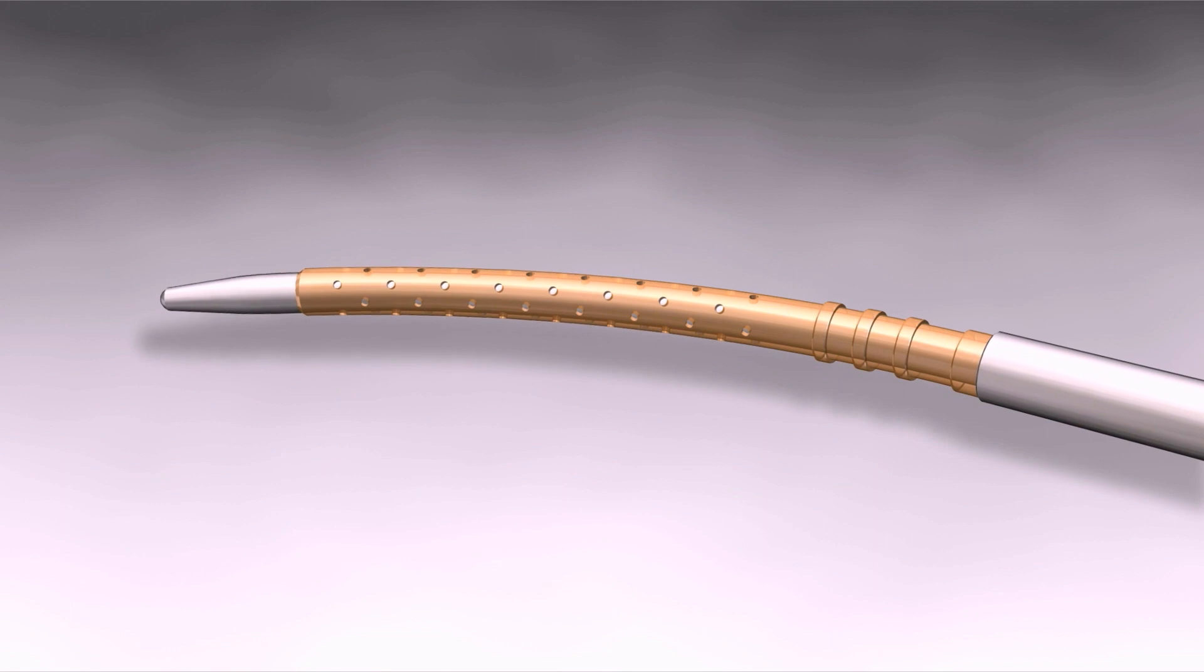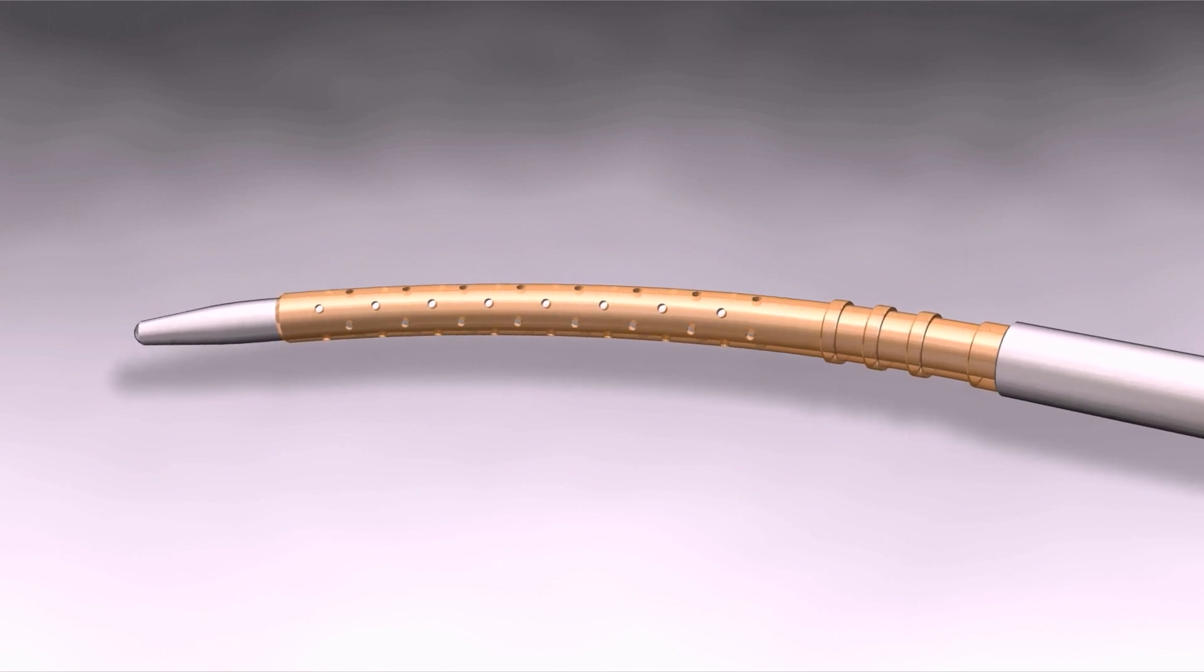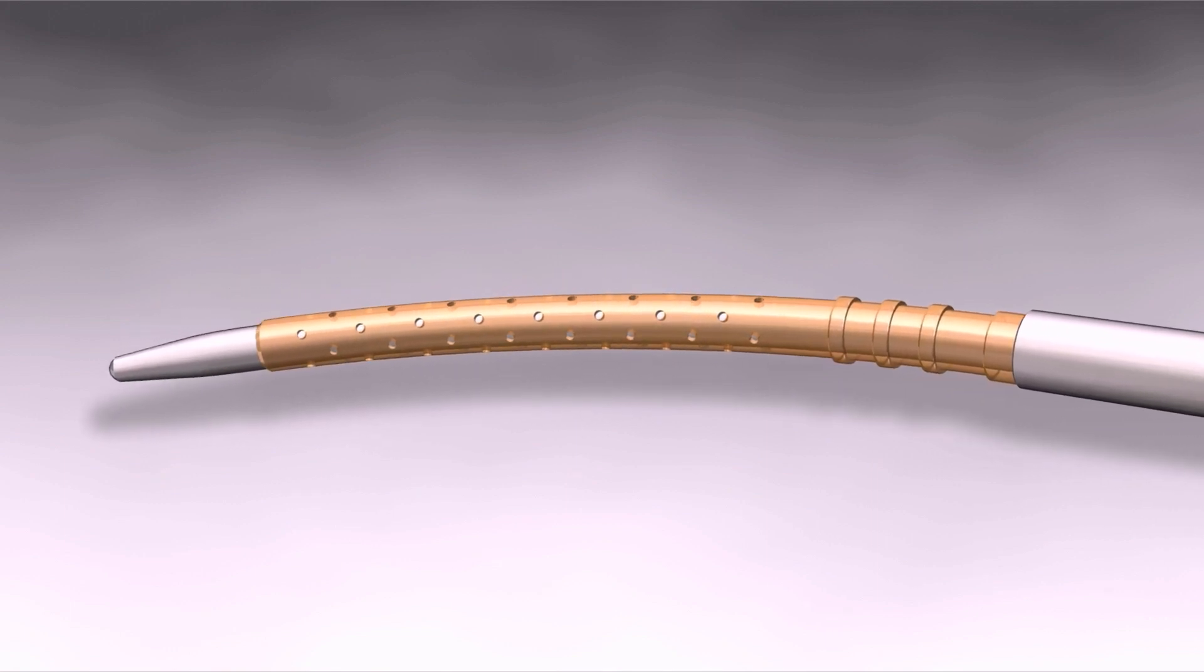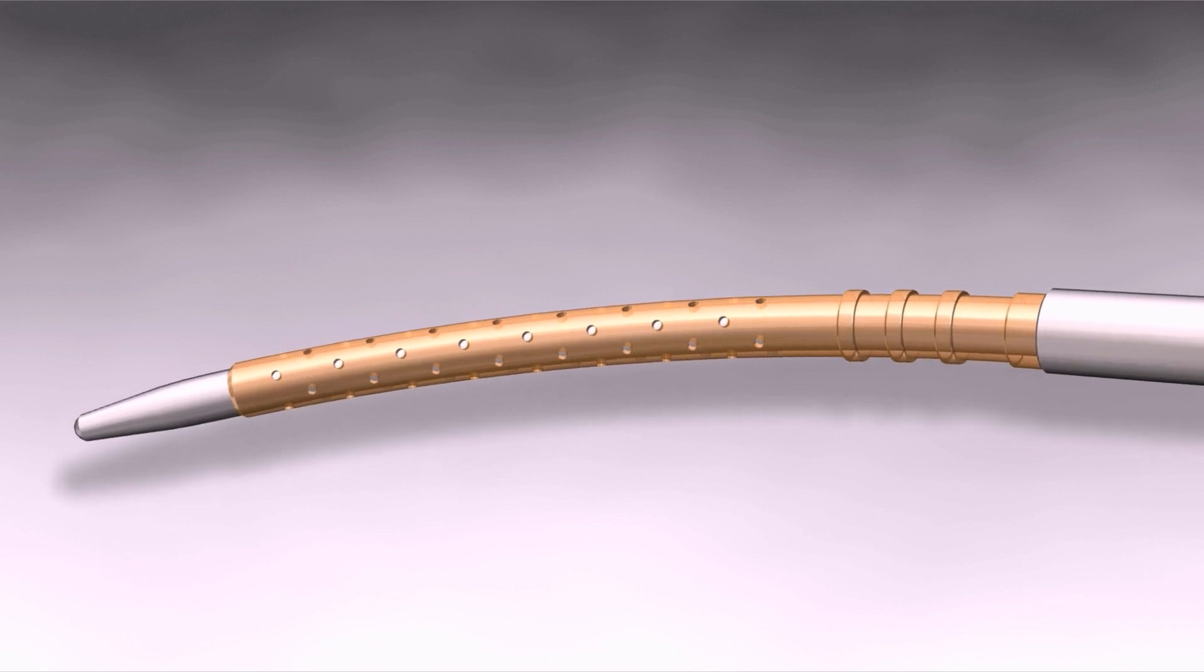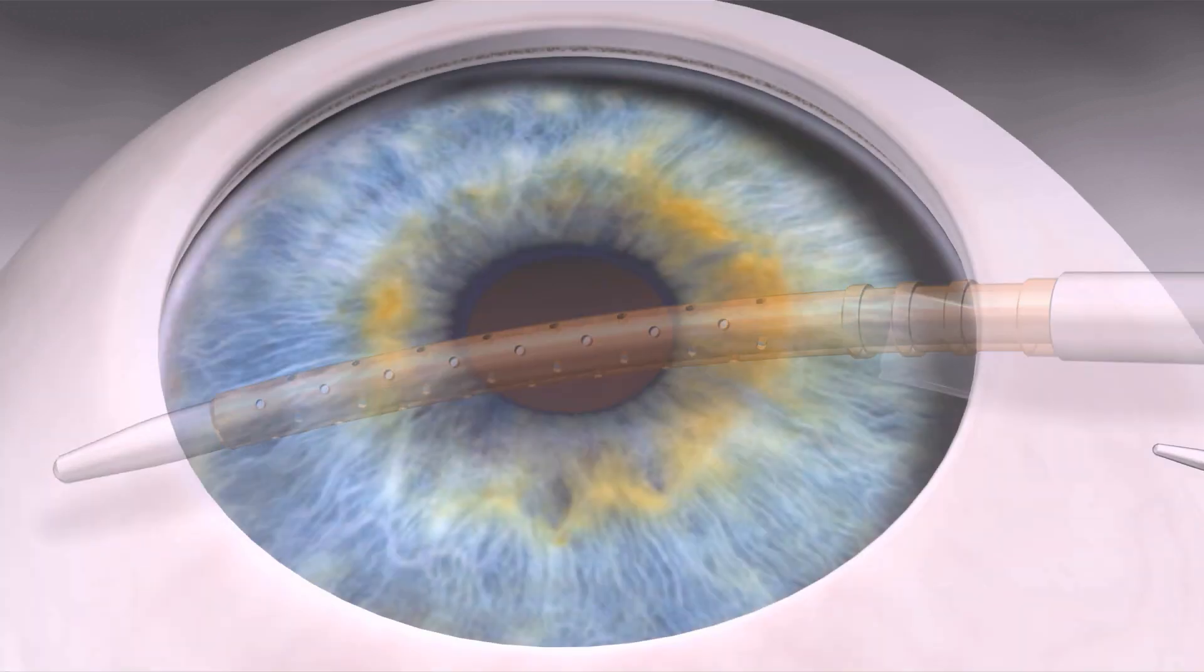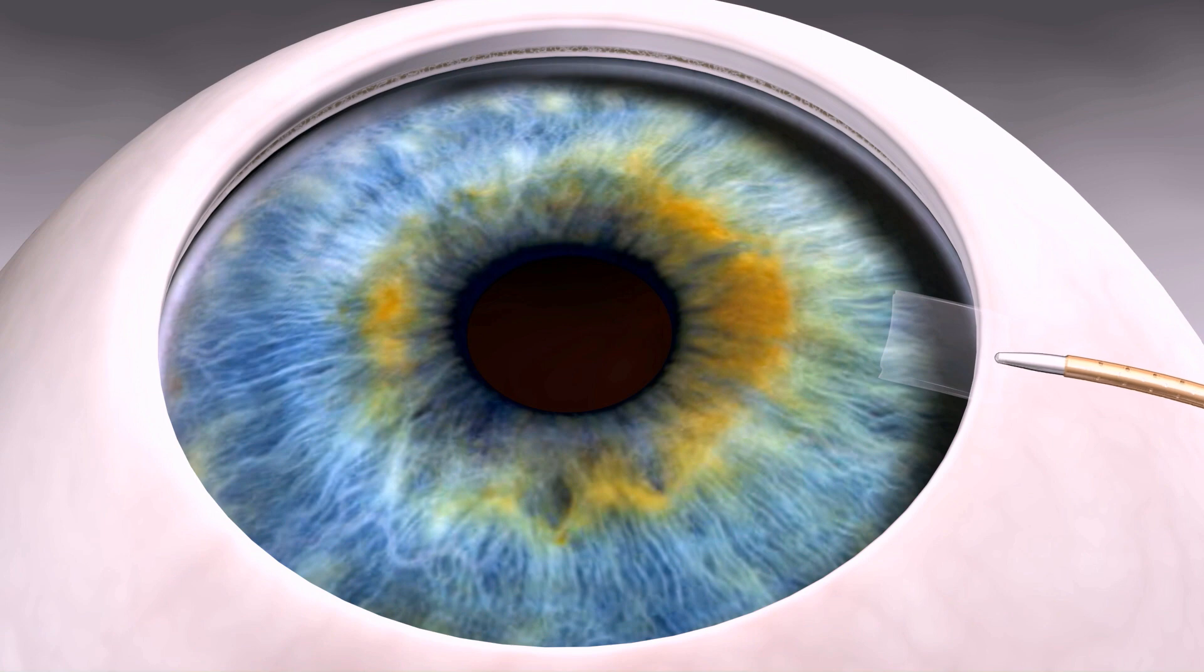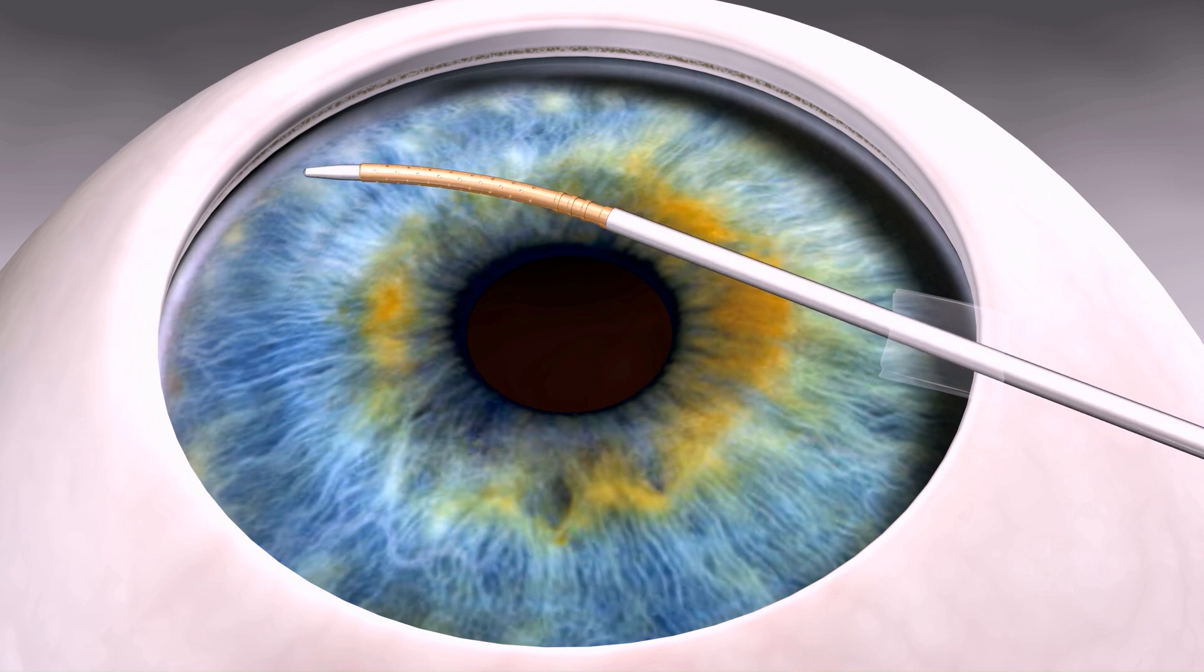The Cypass Microstent is loaded onto the guide wire of the Cypass Applier, a proprietary handheld instrument designed to facilitate the implantation procedure. The Cypass Applier is introduced through the paracentesis and guided to the implantation site across the anterior chamber using magnified visualization.